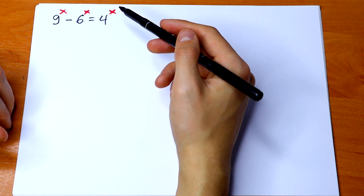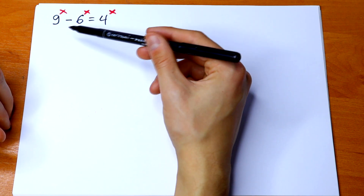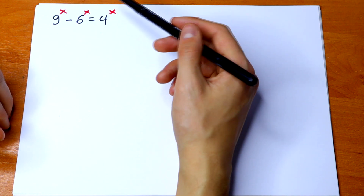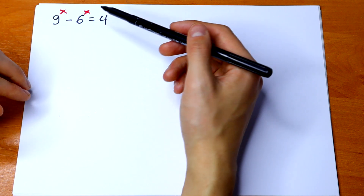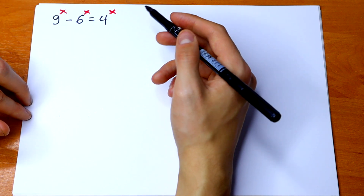On the first look this equation is really hard because we have all different bases. We have the same exponent but different bases. So let's try to solve this.